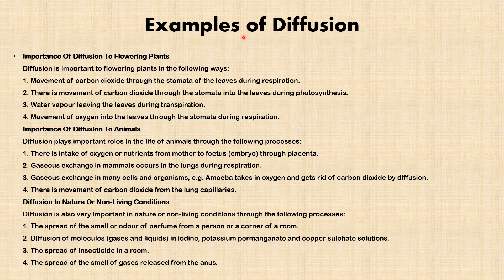Now let's look at examples of diffusion in nature. Diffusion is important to flowering plants in several ways: it allows for movement of carbon dioxide through the stomata of leaves during respiration; movement of carbon dioxide through the stomata into the leaves during photosynthesis; water vapor leaving the leaves during transpiration; and movement of oxygen into the leaves through the stomata during respiration.